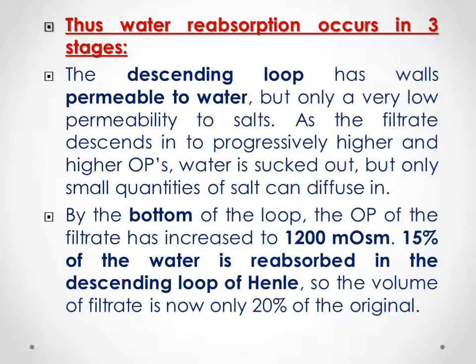Water reabsorption occurs in three stages. Regarding the descending loop of Henle, it has high permeability to water but low permeability to salt — decreased permeability to solutes while increased permeability toward water. As the filtrate descends into the progressively higher osmotic pressure, water is sucked out, but a small quantity of salt can diffuse in. By the bottom of the loop of Henle, osmotic pressure of the filtrate increases to about 1,200 mOsm. About 15% of the water is reabsorbed in the descending loop of Henle, so the volume of filtrate is now about 20% of the original filtrate.